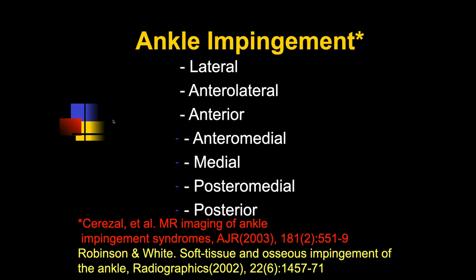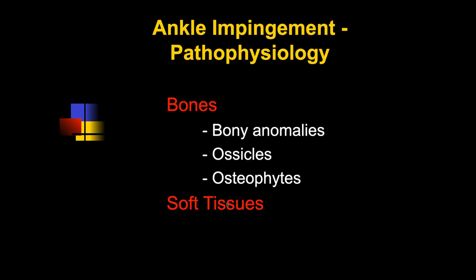Let's go on and talk about impingement syndromes. There are about seven impingement syndromes around the ankle: lateral, anterolateral, anterior, anteromedial, medial, posteromedial, and posterior — basically all the way around. The pathophysiology involves either bony anomalies producing impingement, ossicles, osteophytes, or soft tissue thickening and scar tissue as a cause.